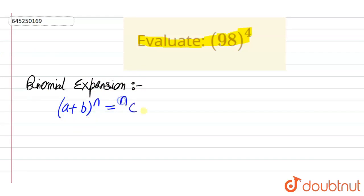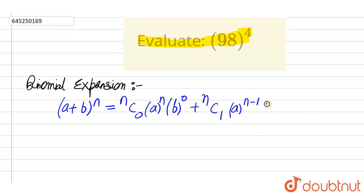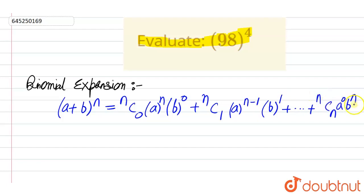This is the binomial expansion: C0 A to the power n, B to the power 0, plus C1 A to the power n minus 1 into B to the power 1. This series continues up to the last term, which is Cn, A to the power 0 into B to the power n.